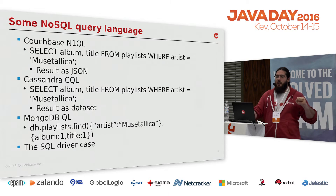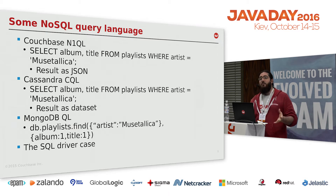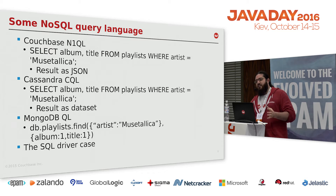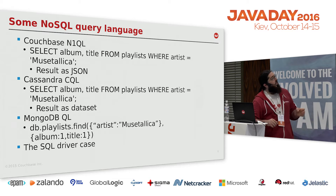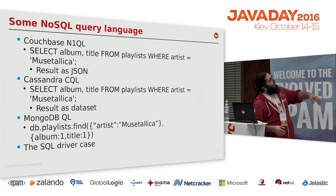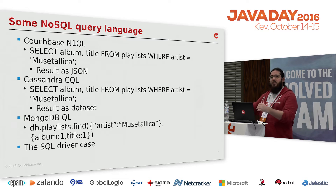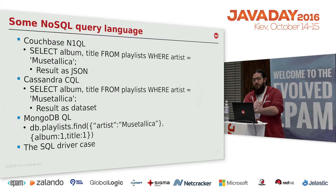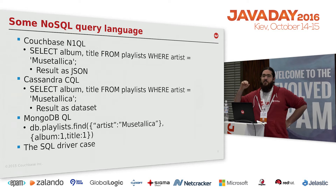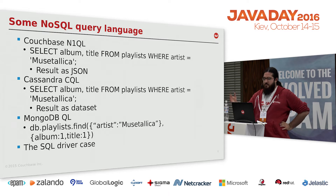So saying NoSQL means 'not SQL' is a trap — it's not true anymore. For example, I work for Couchbase and we have a query language called N1QL. N1QL is a superset of SQL. Everything you can write in SQL-92 you can write with N1QL. You can select album and title from a bucket where artist equals Metallica and get the result as JSON. N1QL supports joins, sub-selects — all the things you'd expect from SQL. It's a NoSQL database that allows you to do SQL.